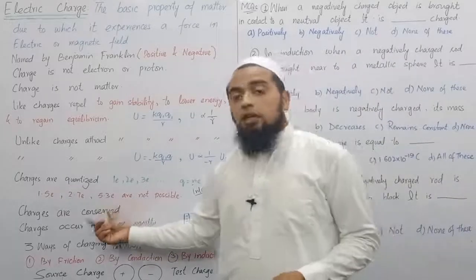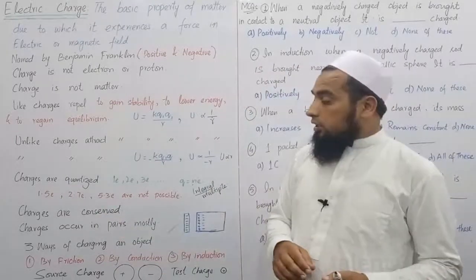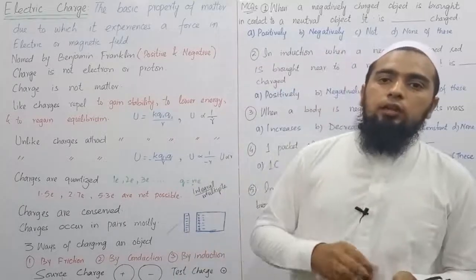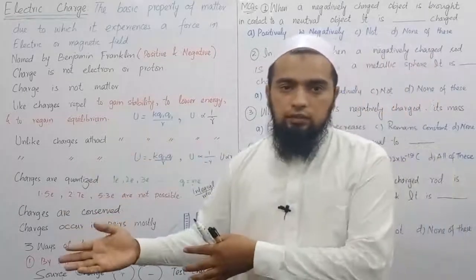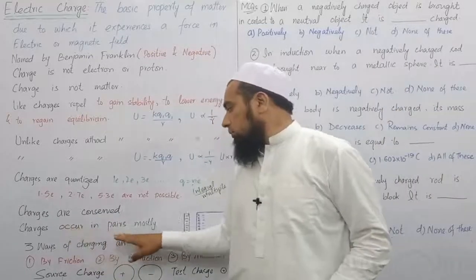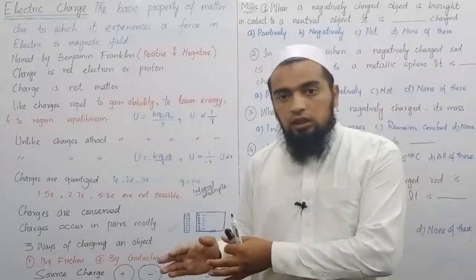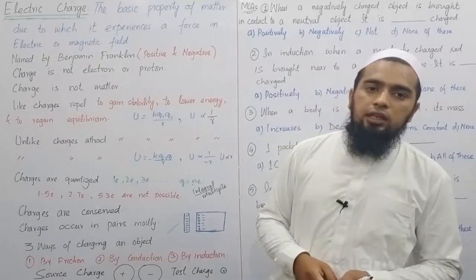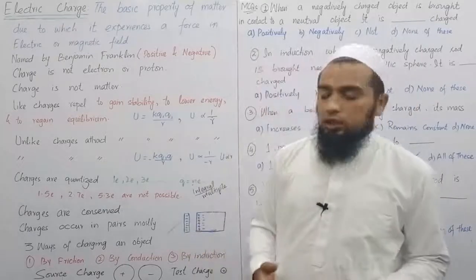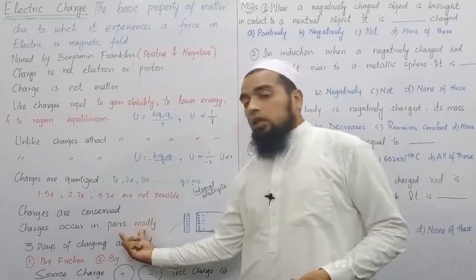Charges are conserved. We cannot create or destroy charges. However many charges Allah has created in the universe, they will remain the same. If one object loses charge, another gains it. Charges mostly occur in pairs — where there is positive, there is negative. In a neutral object, the number of protons equals the number of electrons.